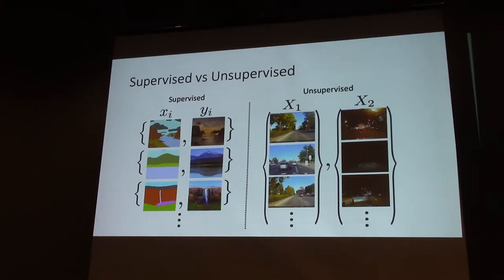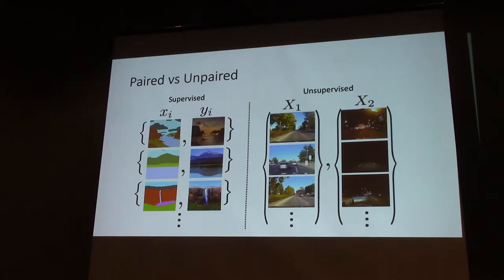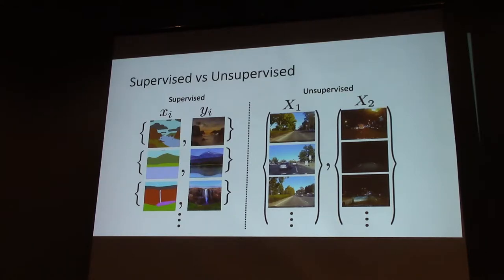This problem can be studied in many settings. The most common two are supervised and unsupervised. In supervised settings, training data consists of samples with paired supervision — like an input segmentation mask and the corresponding output image. In the unsupervised setting, you don't have corresponding images; all you have are two datasets, and you learn the mapping function between them without any supervision.